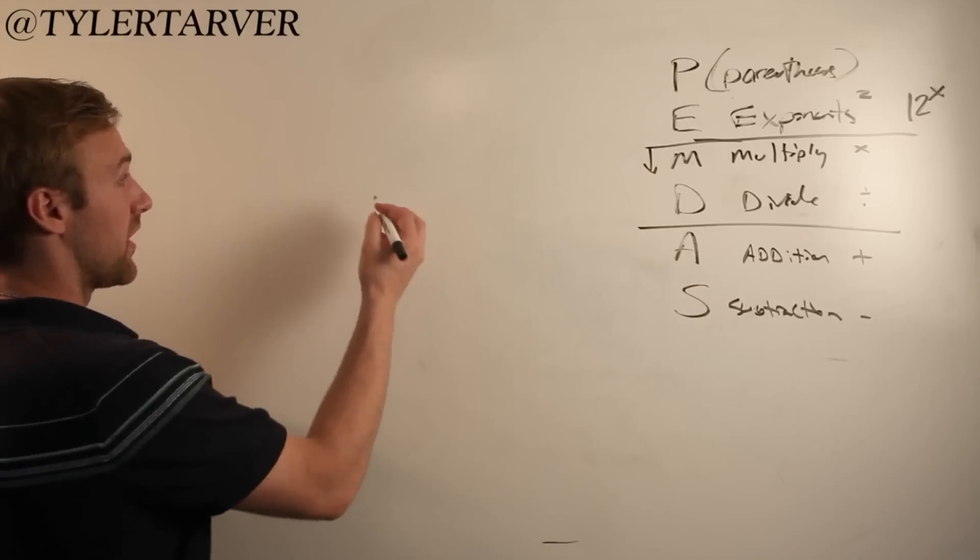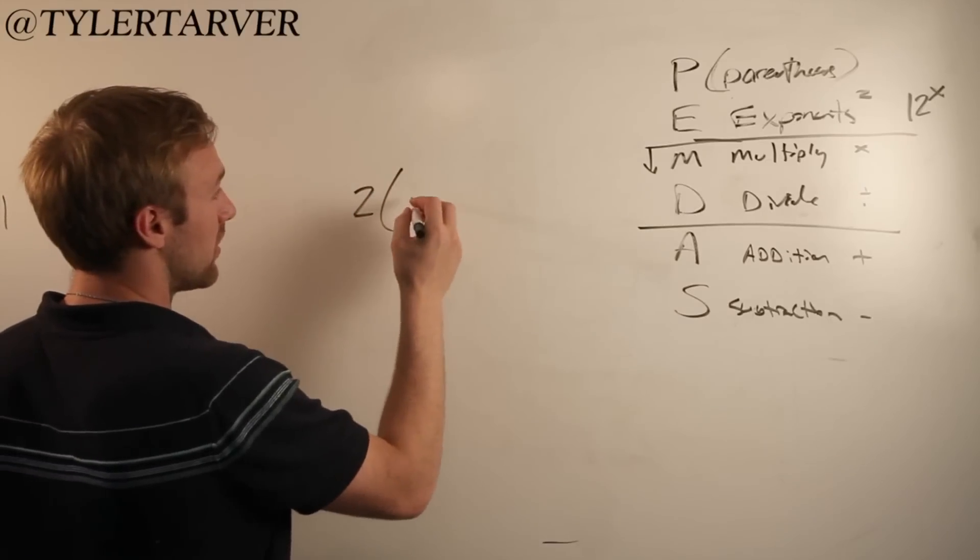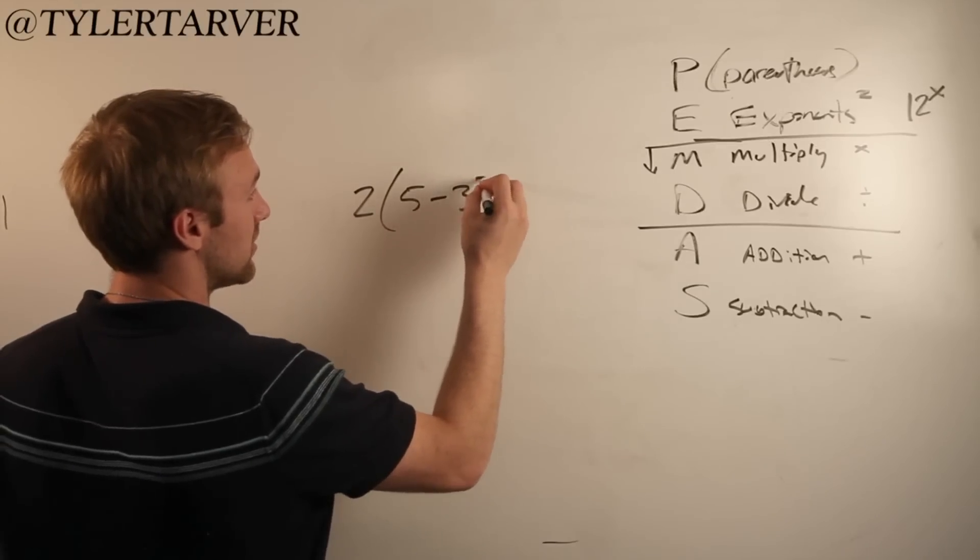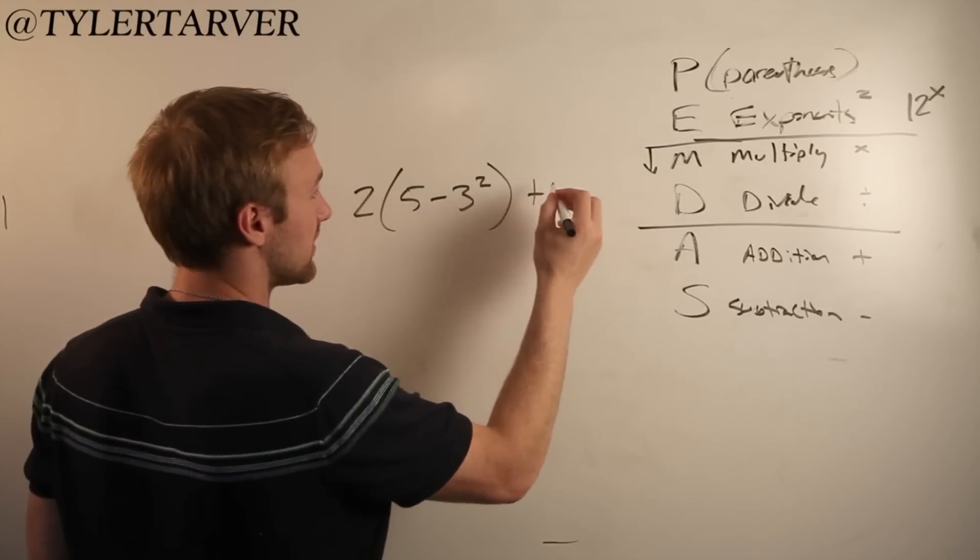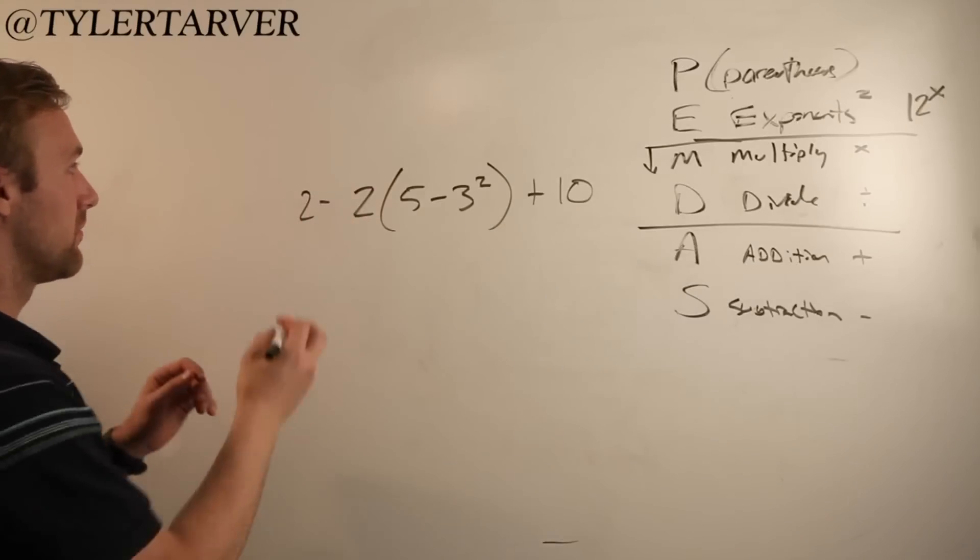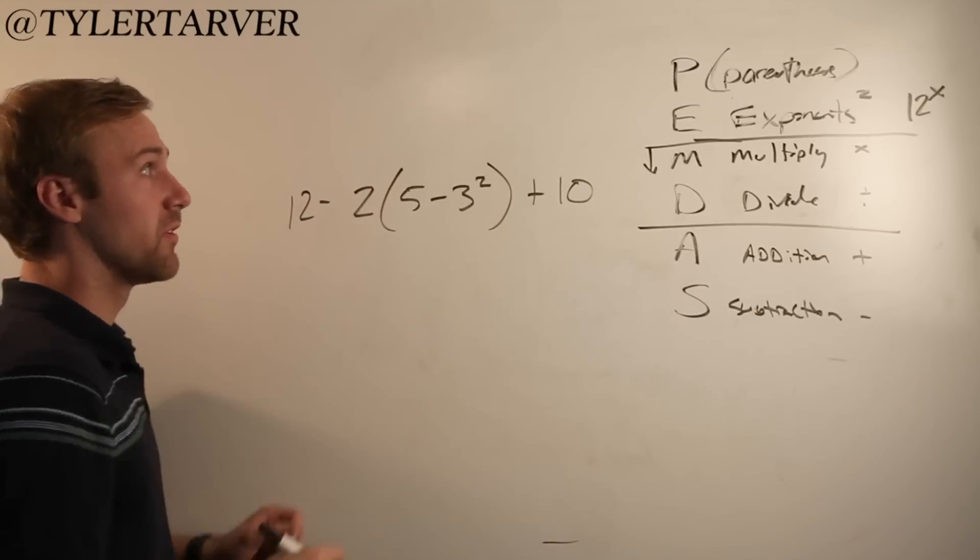Say you've got 2 times 5 minus 3 squared plus 10. And then 12 minus. So we've got this equation right here.